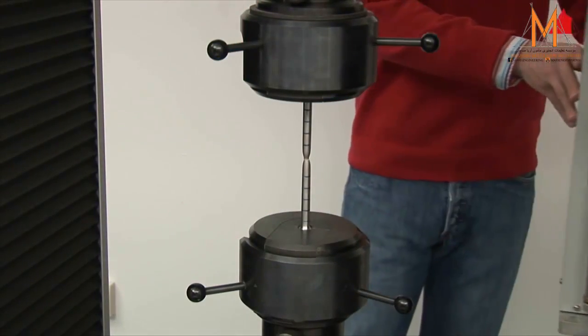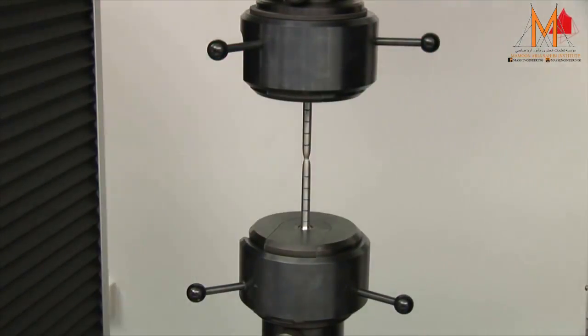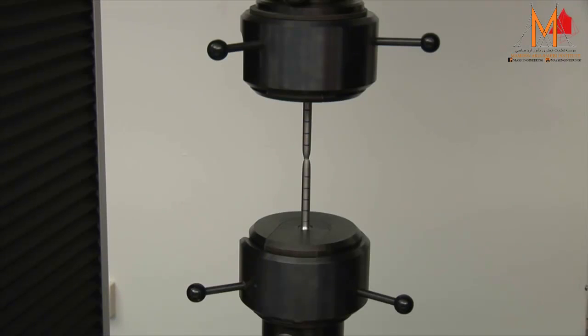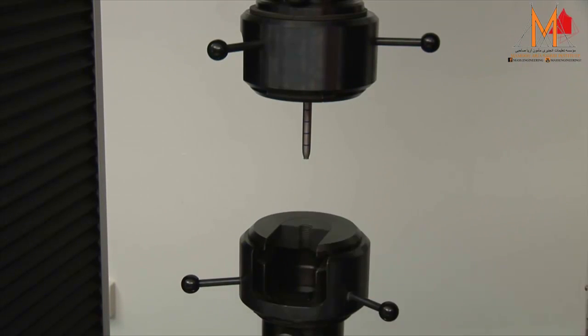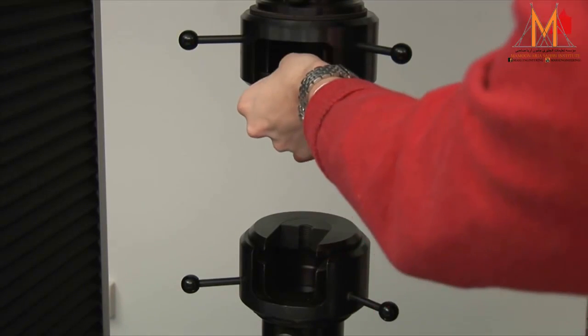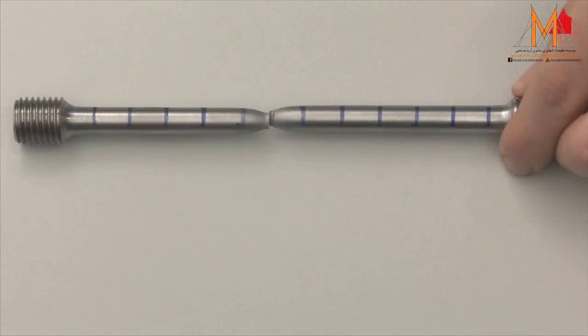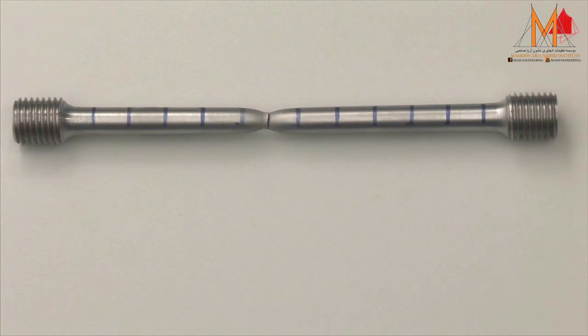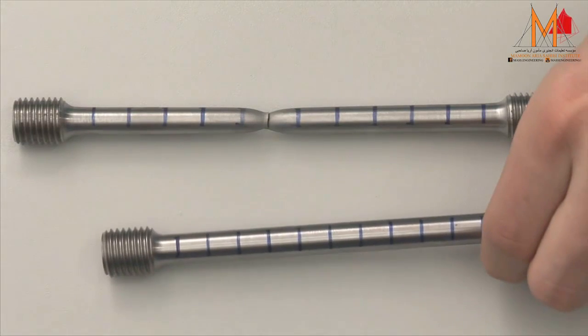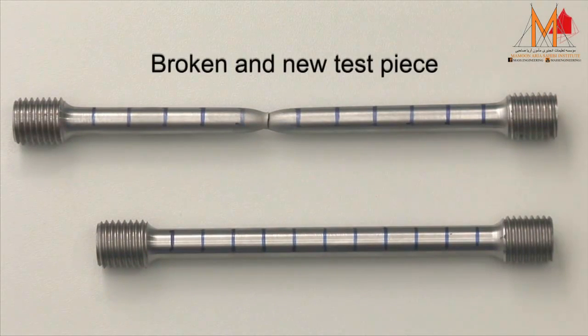In the last step, the tester swings the extensometer back into its resting position and removes the broken test piece. On the work table, he puts the fragments back together again. With the help of the distance marks, the percentage elongation after fracture can be determined. This is the permanent strain after fracture and amounts to about 30% in this example.